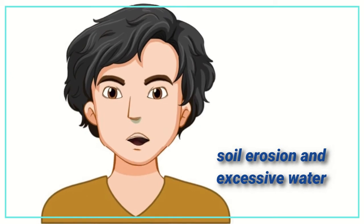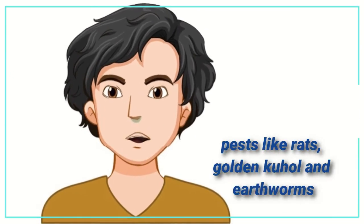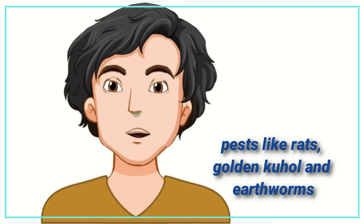Soil erosion and excessive water during rainy season and pests like rats, golden kajal, and earthworms.